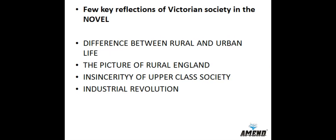Let us discuss a few key reflections of Victorian society in Great Expectations. The first one is the difference between rural and urban life. A marked difference existed between rural and urban England. The lives of rural people were still very simple and calm — they were honest and caring. But the people of the city, like London, became complicated and complex. The picture of rural England is given through Joe's family. In the opening chapter, we find an orphan boy named Pip, who lives with his sister, Mrs. Joe Gargery, who is married to the blacksmith Joe Gargery.